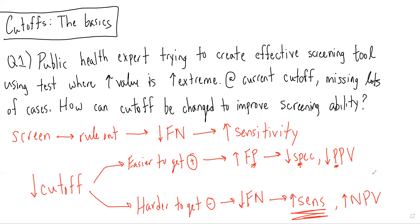Just as a reminder from the lecture, we're always thinking about how extreme the cutoff is. In this case, we want to make the cutoff less extreme, such that it is harder to get a negative result, such that we can be more confident that the results that we get that are negative are patients who truly do not have the disease. Therefore, a lower cutoff is going to capture more patients and lead to a more sensitive test.